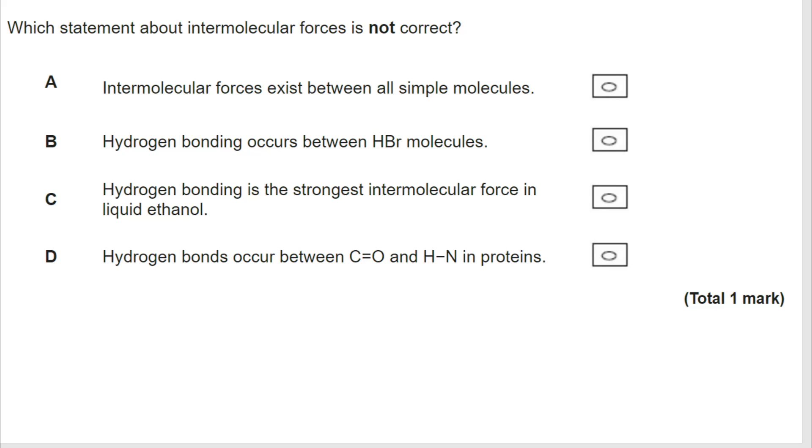So we're now identifying which of the statements is not correct. So let's take a look at these. Intermolecular forces exist between all simple molecules. This is true. Van der Waals forces come from the random movement of electrons. Everything has Van der Waals forces. All simple molecules have Van der Waals forces. So because that is a true statement, it's not the correct answer because we're looking for a statement that's not correct. In hydrogen bonding, the strongest intermolecular force in ethanol, hydrogen bonding is the strongest intermolecular force. And we've got the OH bond to prove that. Hydrogen bonding exists in anything where the H is bonded to an N, an O or an F.